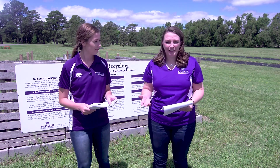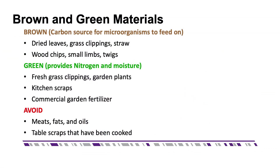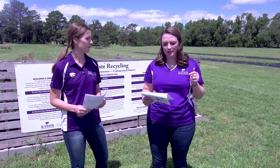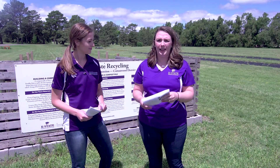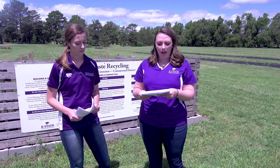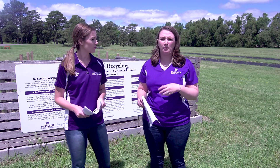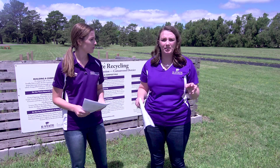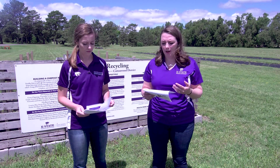We're going to talk about the different types of materials you can add to your compost. We separate them into two categories: browns and greens. Browns are high in carbon, which is what the microorganisms feed on, and include dried leaves, grass clippings, straw, wood chips, limbs, or twigs. Greens provide nitrogen and moisture, and include freshly cut grass, plants you want to discard, kitchen scraps, vegetables, fruit, and coffee grounds.